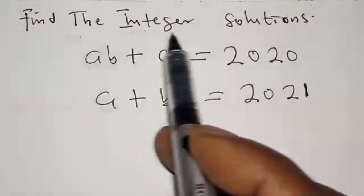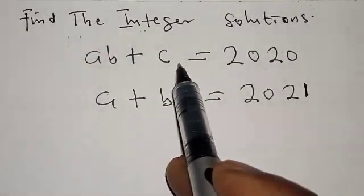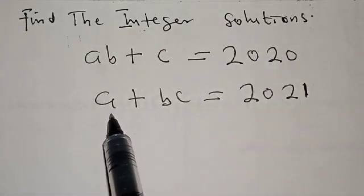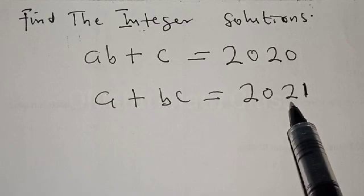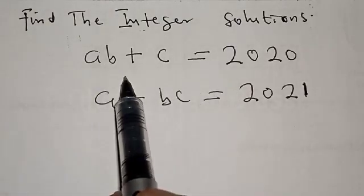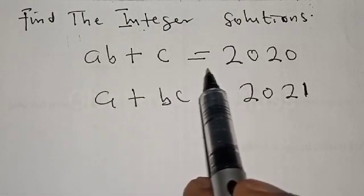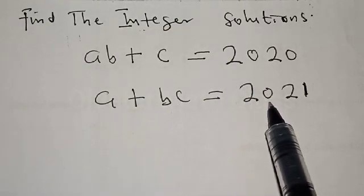Find the integer solutions. AB plus C is equal to 2020, and A plus BC is equal to 2021. Welcome to my class. In this class, we want to find the integer solutions from these given equations: AB plus C equals 2020, and A plus BC equals 2021.